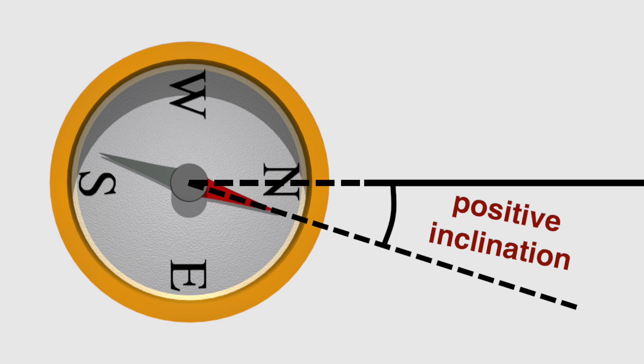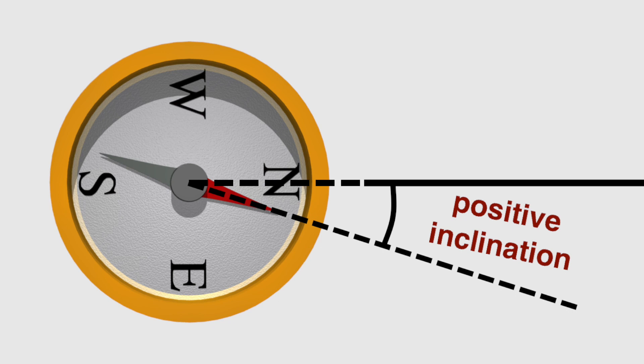As a convention, the inclination is given as a positive number if it points into the ground, so when the compass needle dips down. Conversely, if the needle points up away from the ground, the inclination is a negative number.